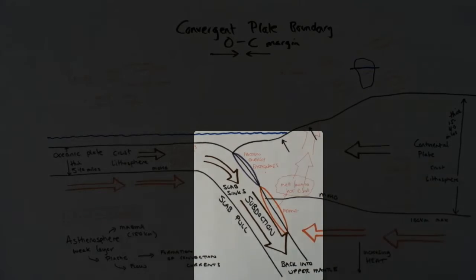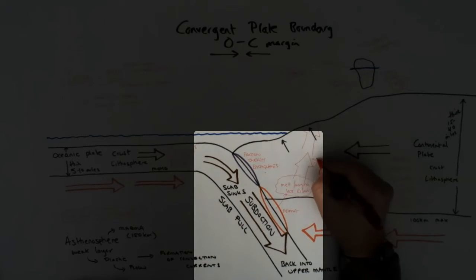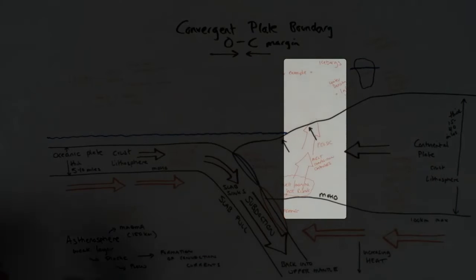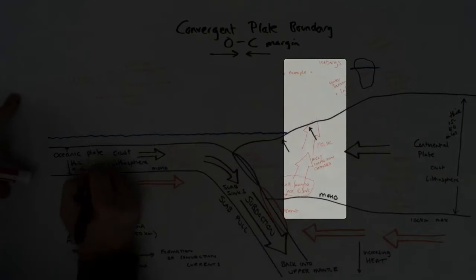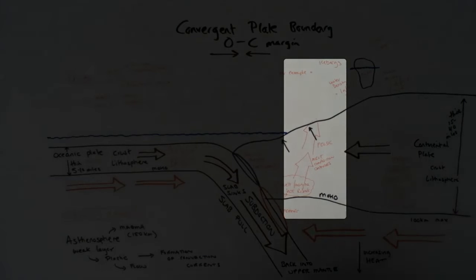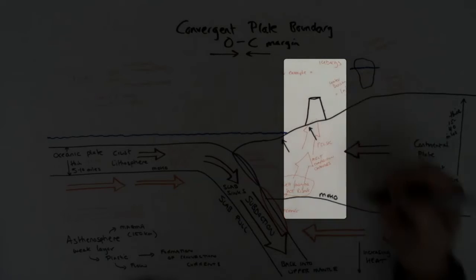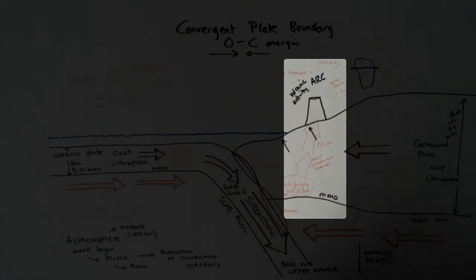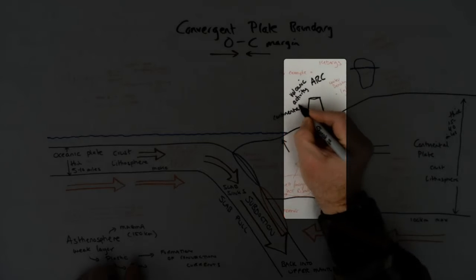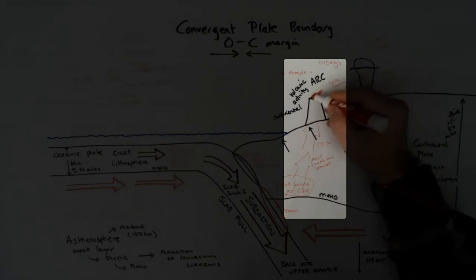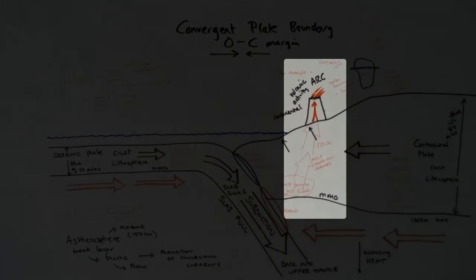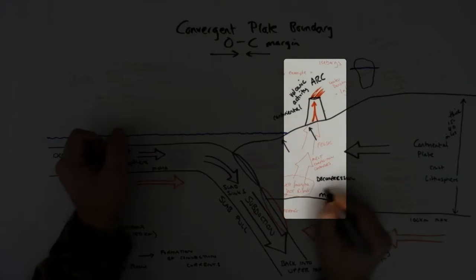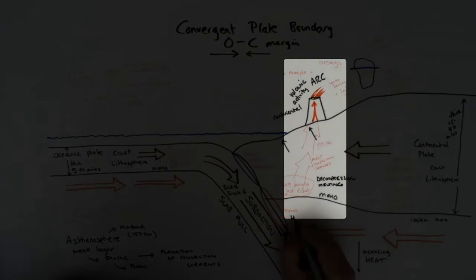The formation of magma from the melting of the descending plate and the continental plate forms within the continental plate itself and rises up, melting through the continental plate as it's hot, less dense, and more buoyant. It reaches the surface and forms a chain or arc of continental volcanic activity, close to the coastline. There's a constant supply of magma from this subducting plate and the melting continental plate, resulting in constant volcanic activity.